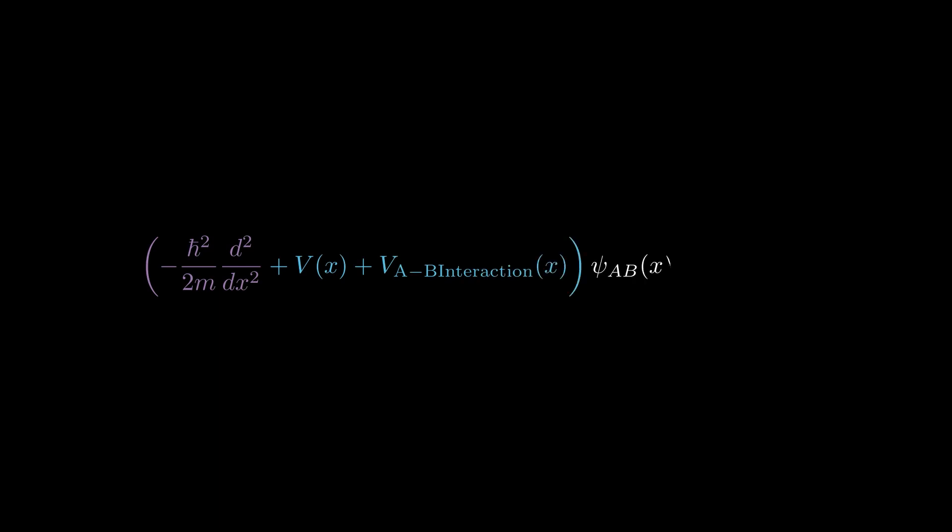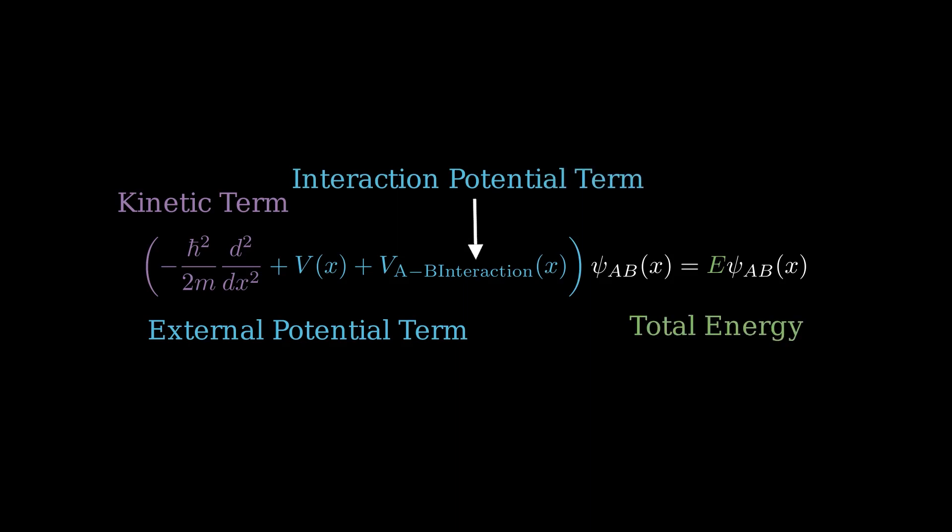To generate entangled states, we require the total energy to depend on the interaction between systems. This necessitates an interaction term in the Schrodinger equation, a potential energy component contingent upon the systems interacting.